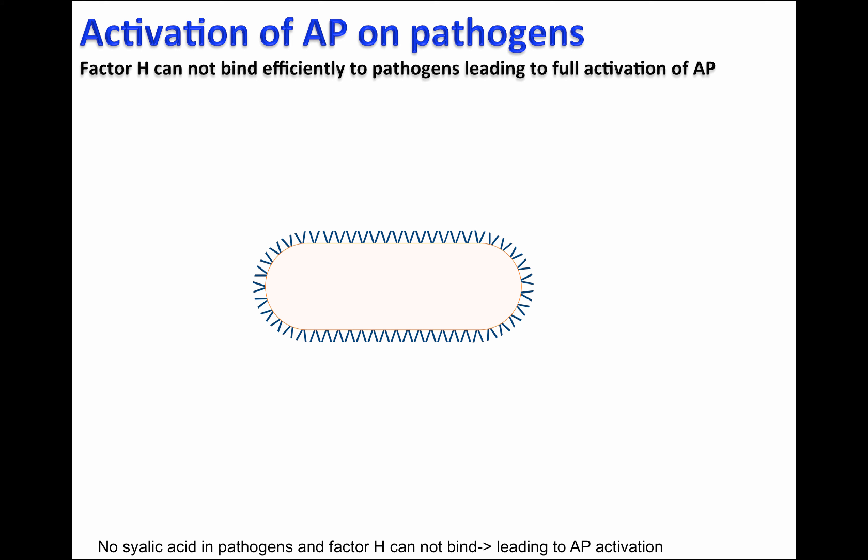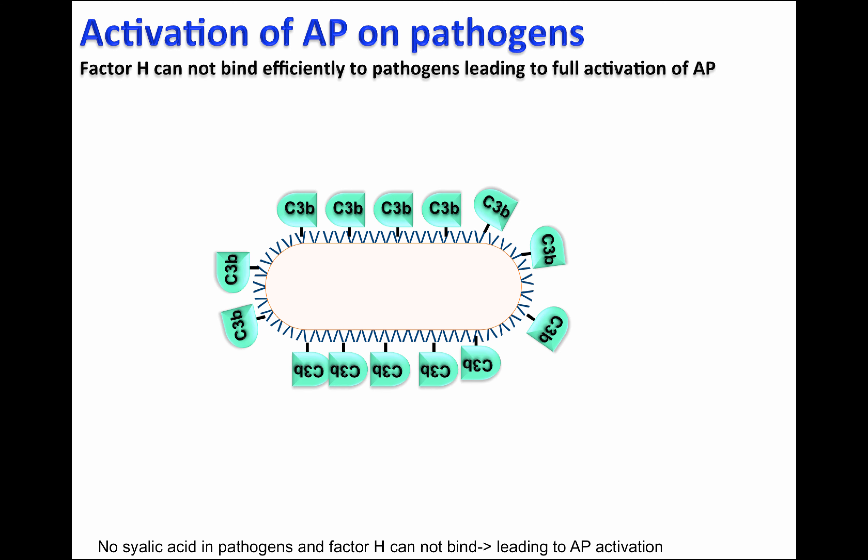The activation of the alternative pathway on pathogens is very efficient, and the reason is very simple. If C3B is deposited on the cell surface of pathogens, Factor H cannot bind efficiently to pathogens, because they don't express certain sialic acid or polyanions. Since Factor H cannot protect pathogens from the alternative pathway, this will proceed, and several molecules of C3B will be deposited on the cell surface of pathogens. Later on, the membrane attack complex can be formed, destroying these pathogens.